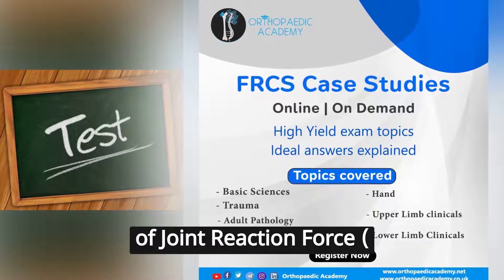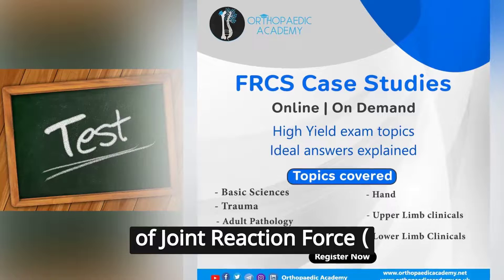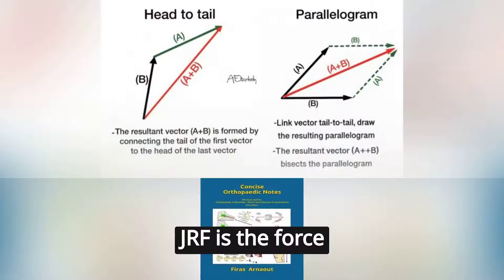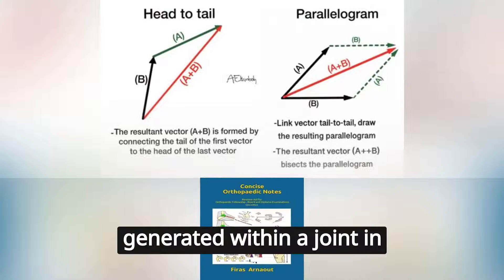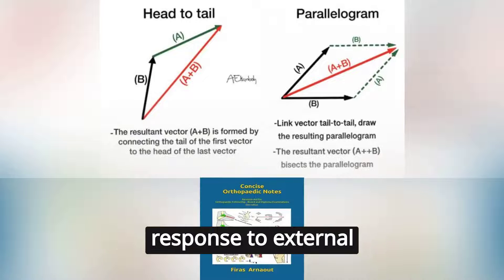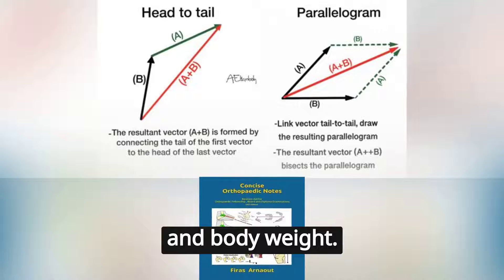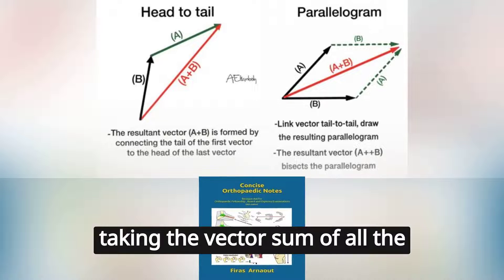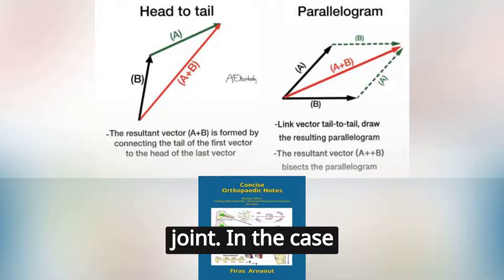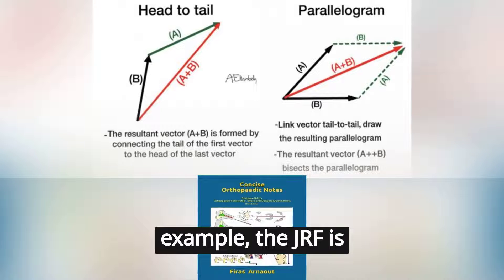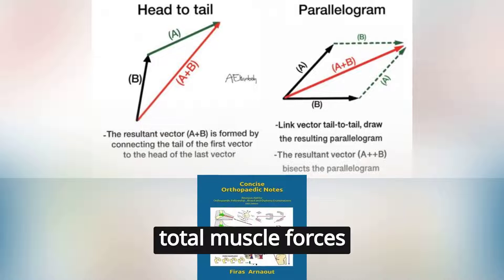Can you explain the concept of joint reaction force (JRF) and how it is calculated? JRF is the force generated within a joint in response to external forces from muscle contractions and body weight. It is calculated by taking the vector sum of all the forces acting on the joint. In the case of the hip joint, for example, the JRF is equal to the body weight plus the total muscle forces acting on the joint.